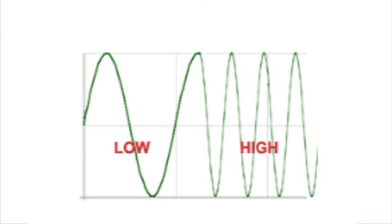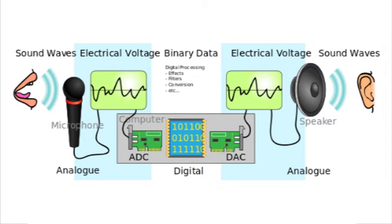Sound waves vary continuously, which means that sound is analog. Computers cannot work with analog data, so sound waves need to be sampled in order to be stored in a computer. Sampling means measuring the amplitude of the sound wave, and this is done using an analog-to-digital converter. To convert the analog data to digital, the sound waves are sampled at regular time intervals. The amplitude of the sound cannot be measured precisely, so approximate values are stored.